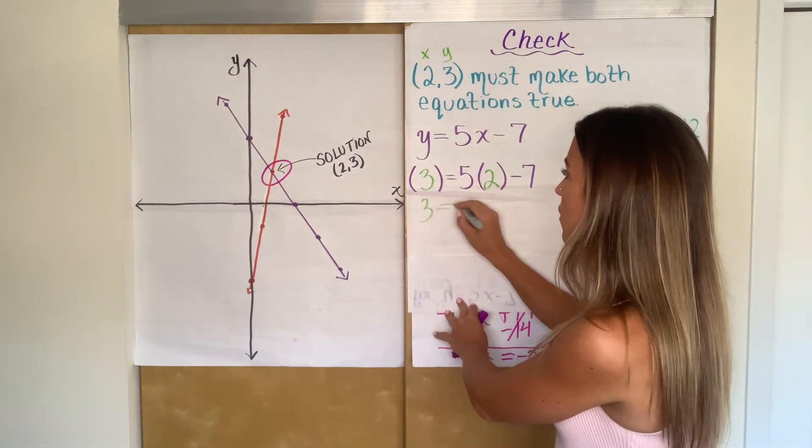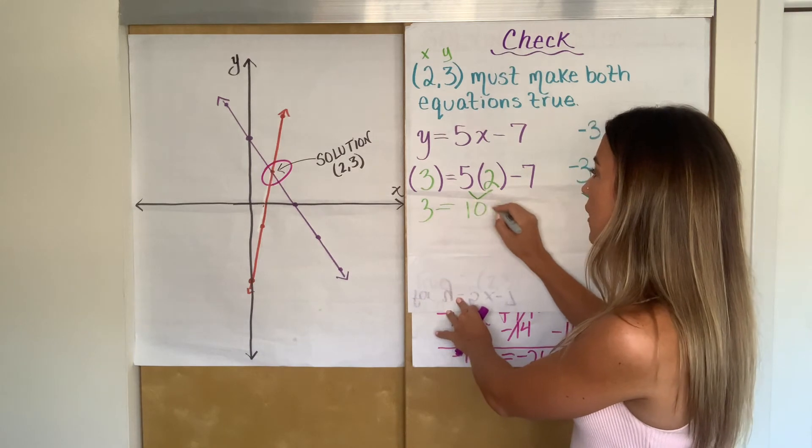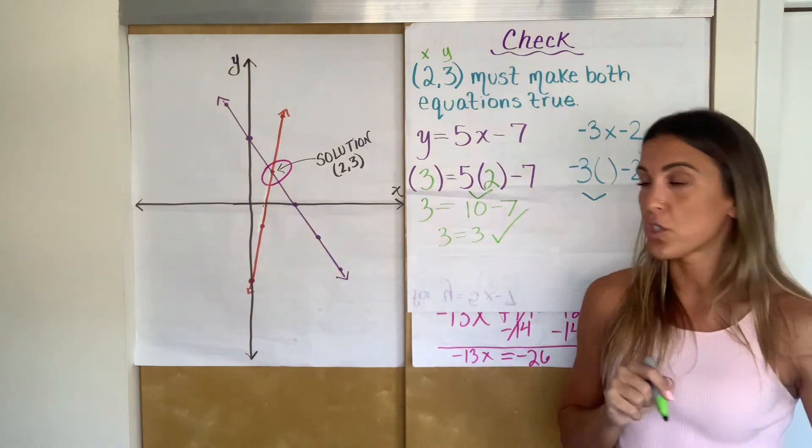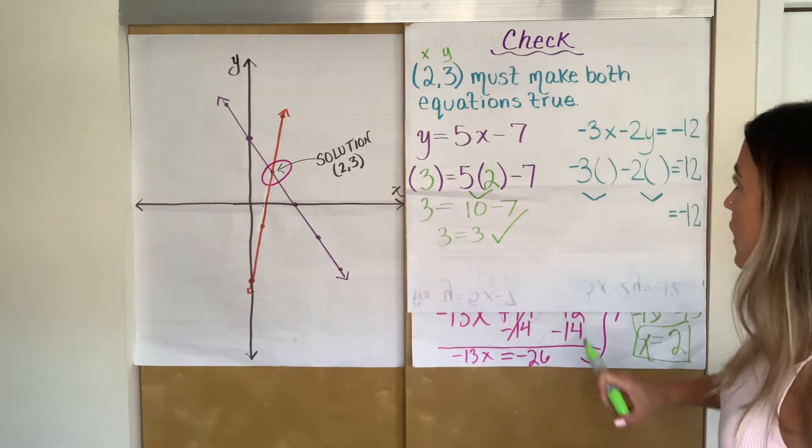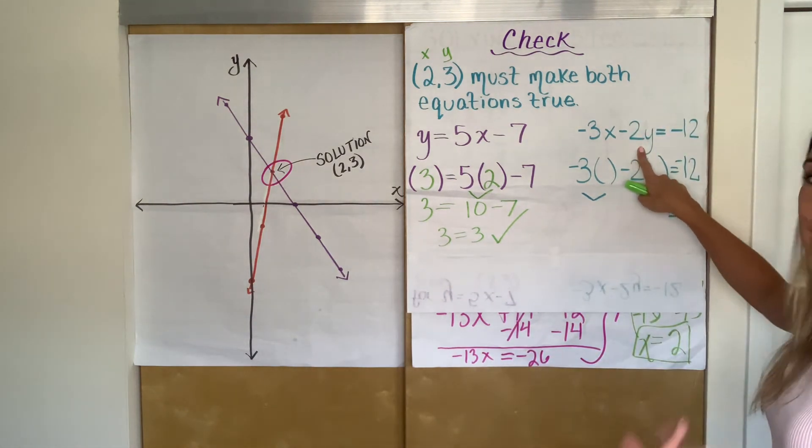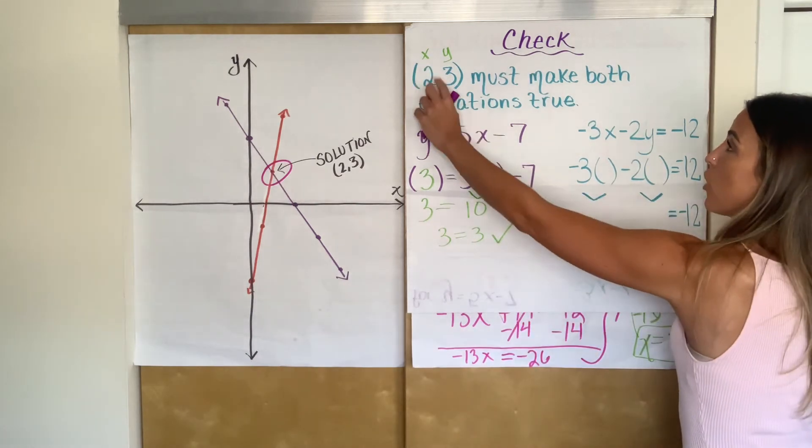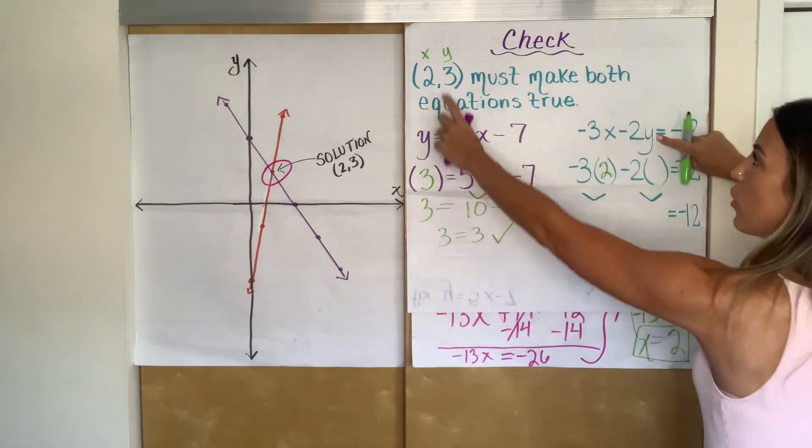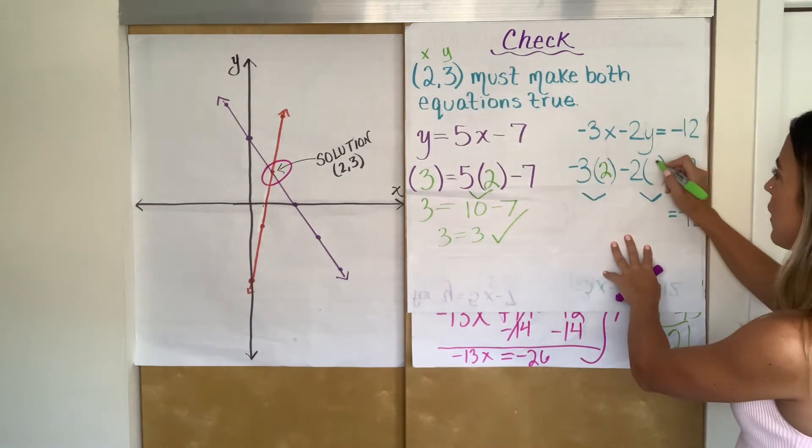3 equals 5 times 2 is 10. 10 minus 7, 3 equals 3. That's a true statement. So so far, we're so good. Let's go to the next equation. That was our second equation. So let's substitute again. My X value was 2 in my solution. So where I see an X, let's replace it with a 2. My Y value was 3. So where I see a Y, let's replace it with a 3.